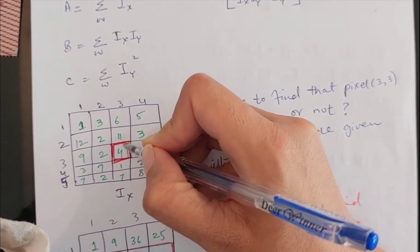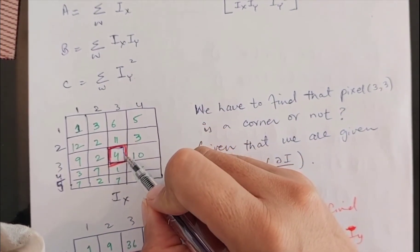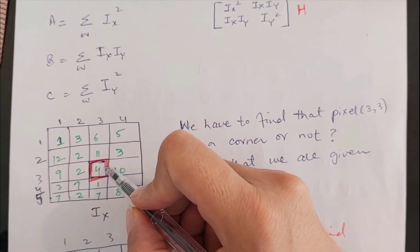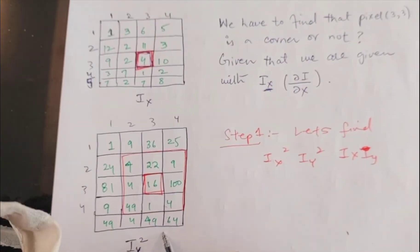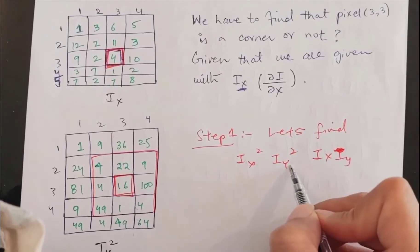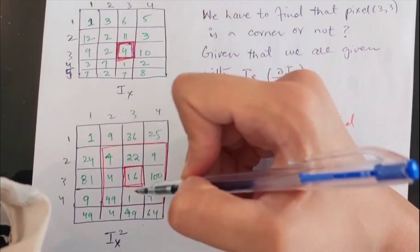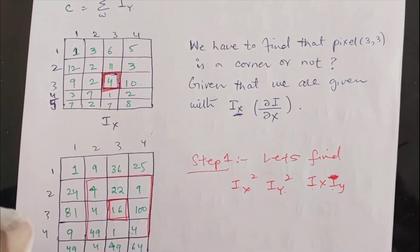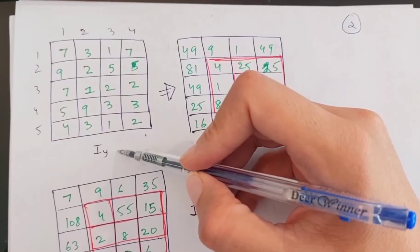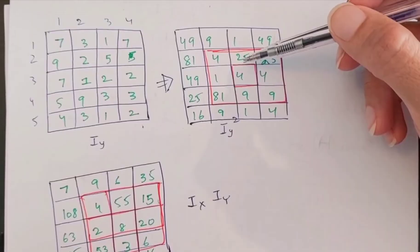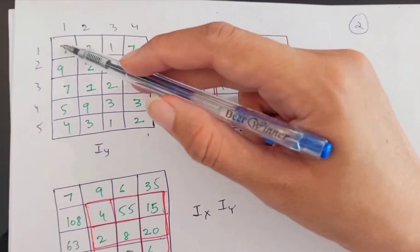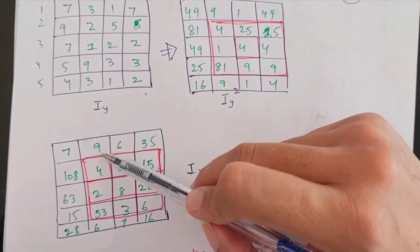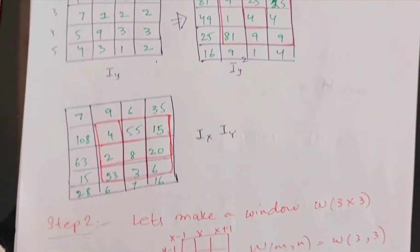We are asked to find out whether this 3x3 pixel is a corner in the image. In step one, we calculate Ix squared, Iy squared, and Ix times Iy. Using the Ix matrix, I calculated Ix squared by taking the square of all values point by point. Similarly, using the Iy matrix provided, I find Iy squared by squaring values point by point. Then I multiplied Iy with Ix to find the IxIy matrix. Now I am done with all my gradients.